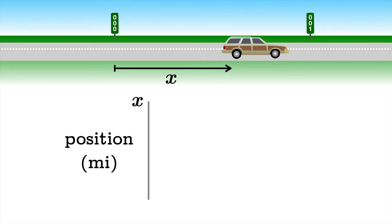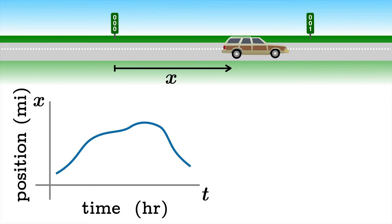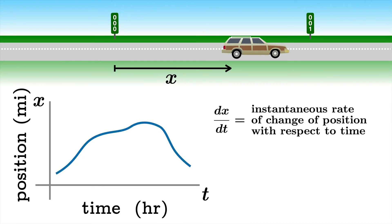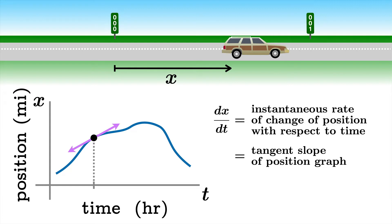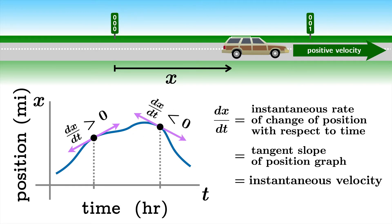You could plot the position as a function of time — in this case we'll use the units miles and hours. The total collection of points representing position versus time gives us what we call a position graph. The derivative of X with respect to t is the instantaneous rate of change of position with respect to time. Graphically it is the tangent slope of the position graph, and it's what we call the instantaneous velocity. If the slope is positive we have a positive velocity — in terms of our motion we are traveling to the right. For negative slopes our velocity is negative, meaning motion to the left.